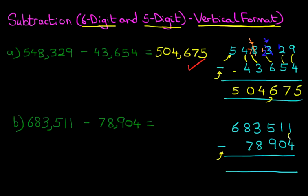Starting on the right-hand side, we have 1 minus 4. 1 minus 4 we cannot do because 1 is smaller than 4, so we're going to take 1 from the column on the left. Let's cross out the 1. 1 minus 1 is 0, and the 1 we have taken we're going to move across to the units column. The units has now become 11 minus 4. 11 minus 4 is 7.